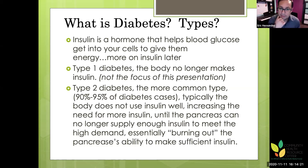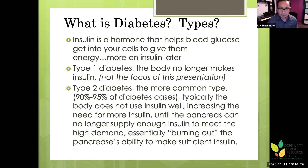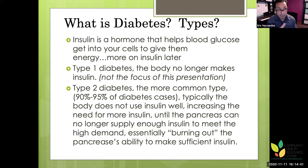In type 1 diabetes, the body no longer makes insulin. This is an autoimmune disease where your own body destroys the insulin-producing cells in your pancreas. Most cases are diagnosed before age 18, often between ages 4 to 7 and again around ages 12 to 16.